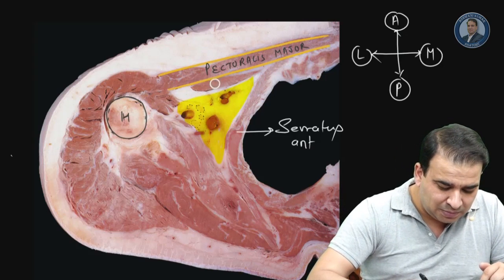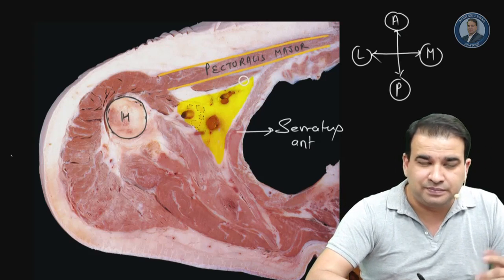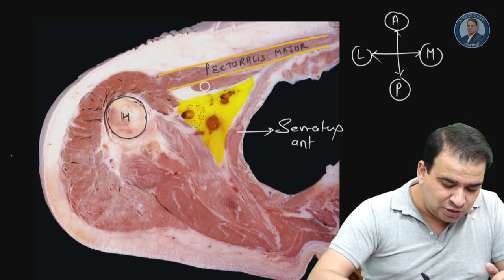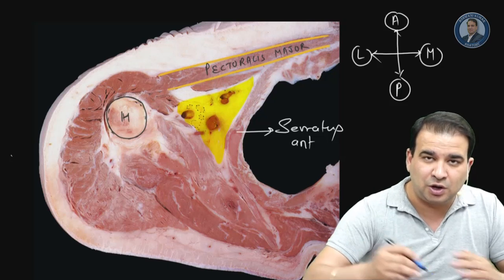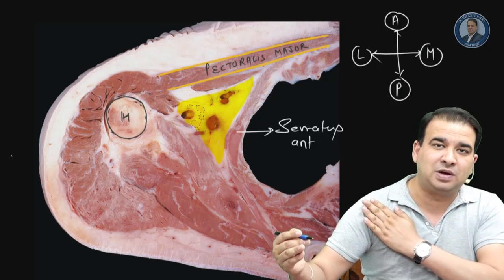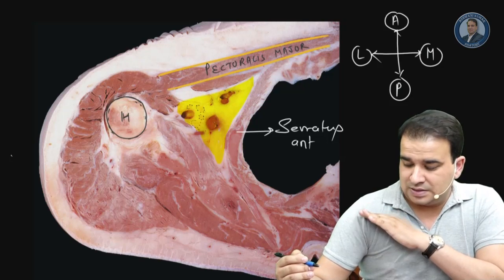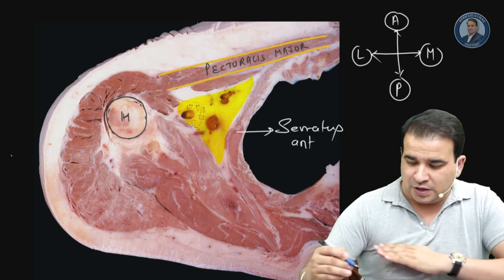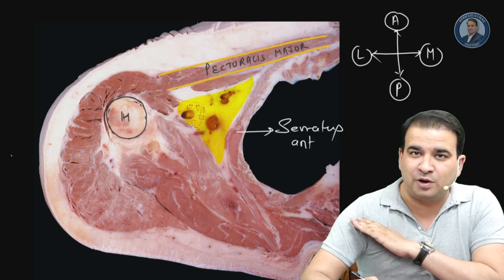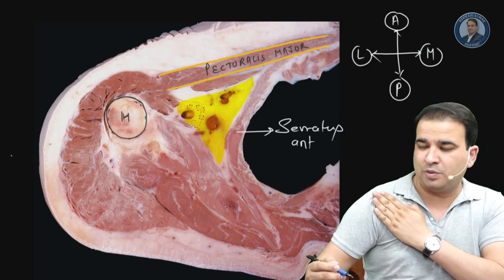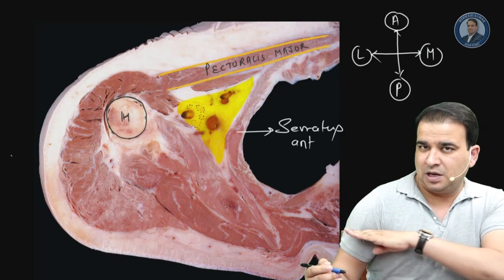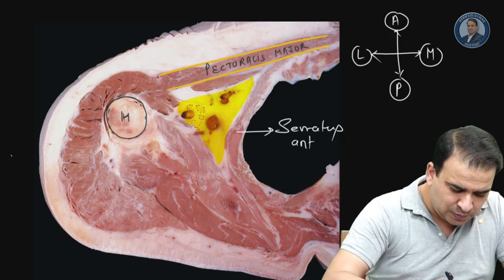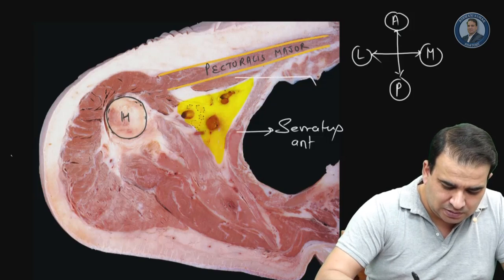The muscle seen behind pectoralis major is pectoralis minor. The hint here is that this muscle also starts from the rib cage — arising from the third or fourth rib — but it is not reaching the humerus, because the insertion of pectoralis minor is to the coracoid process. The section is well below the coracoid process, close to the shaft or surgical neck of the humerus, which is why you cannot appreciate the insertion point of pectoralis minor.